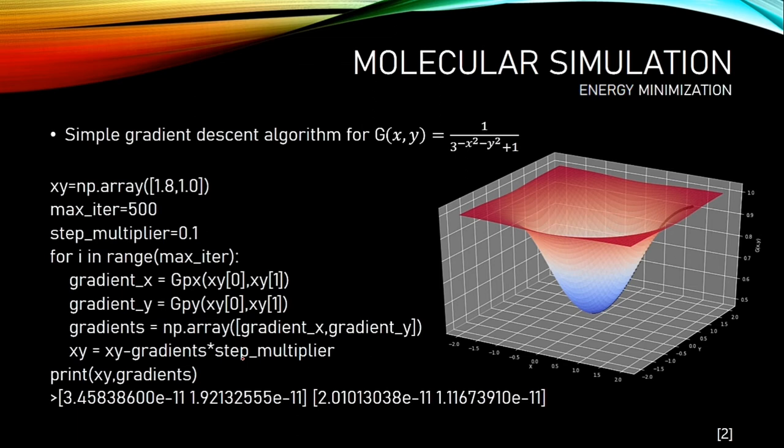In here, we performed 500 iterations. And after that iterations, we are getting our last point. It is almost zero for both x and y. And the important thing is the gradient. Gradient in respect to x is almost zero. Also, y is almost zero.